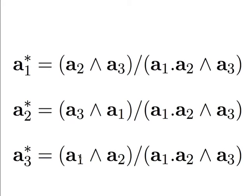The definition of a1* is that it is (a2 cross a3) divided by the volume of the cell formed by a1, a2 and a3. So what will be the units of a1*? One over distance — because the magnitude of a2 cross a3 is an area and we are dividing by a volume. So a1* will have dimensions of 1 upon distance, and similarly for a2* and a3*.